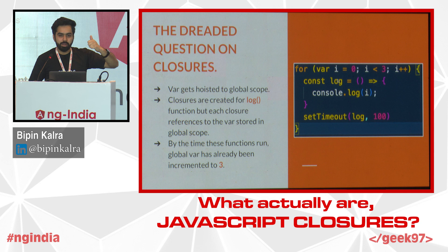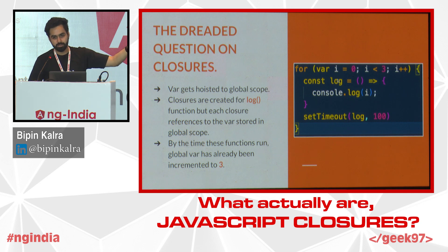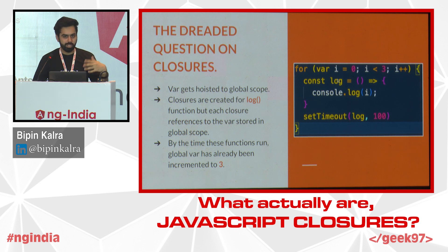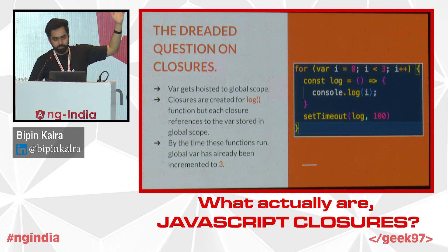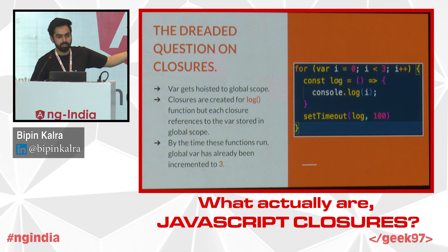Since all three closures reference the same var variable, and since these closures are present in heap memory, they are still present when the function is called after 100 milliseconds. If they weren't in heap, they would have just been garbage collected. That's why the final value of var, which is 3, gets printed three times. That's the real output. When you change it to let, different behavior occurs — but that's a topic for a class on let and var, not closures. So correct your interviewer whenever they ask you that question.